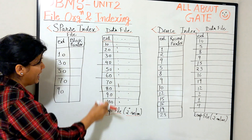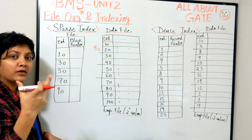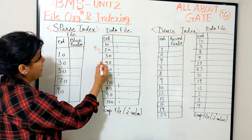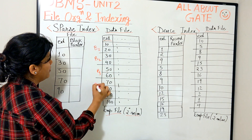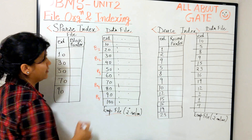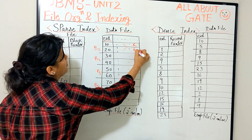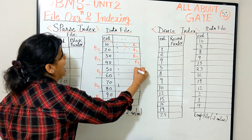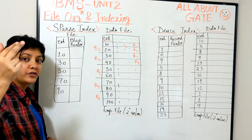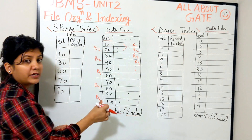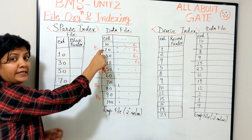Considering that each block consumes two records — block one, block two, block three, block four, and block five — these are the records: record one, record two, record three, record four, and so on. The blocking factor for this data file is that each block can contain two records. Now I'm going to make an index file on this employee ID, which is a sorted field.